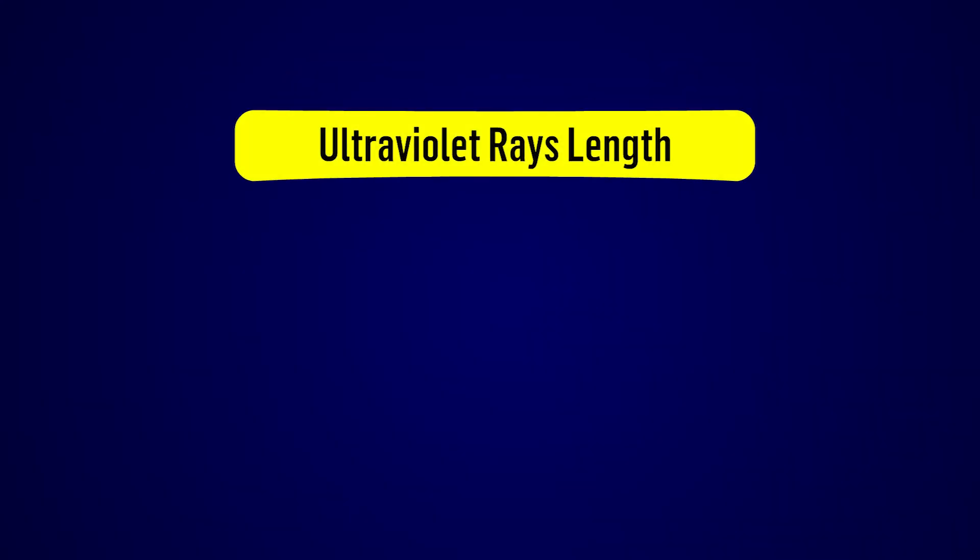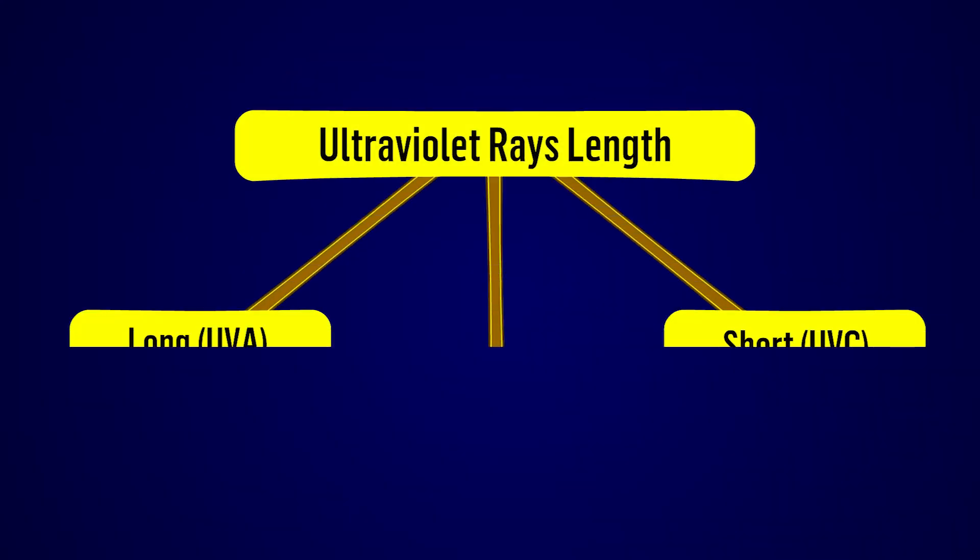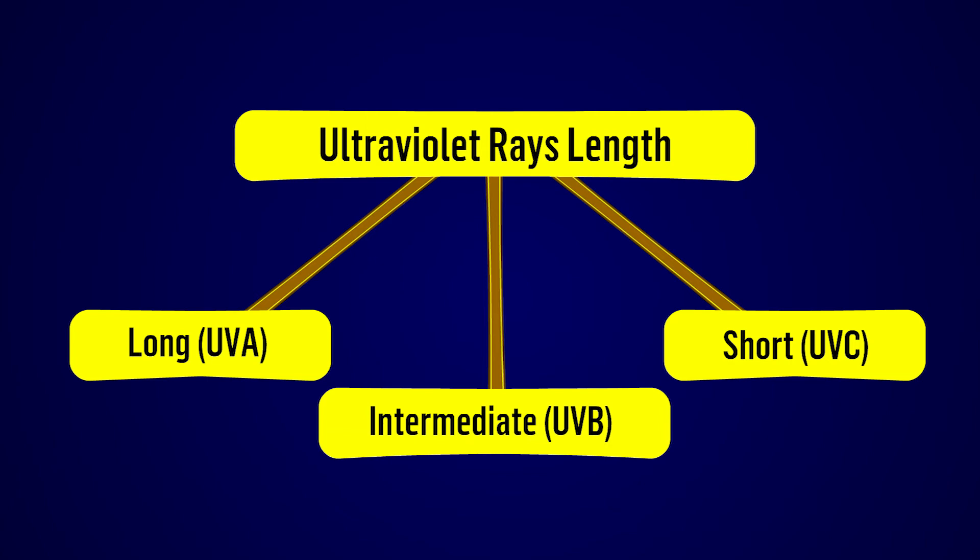Ultraviolet ray lengths include long UVA, intermediate UVB, and short UVC.